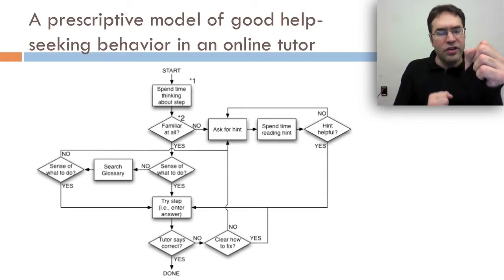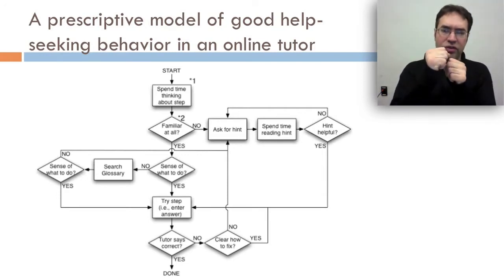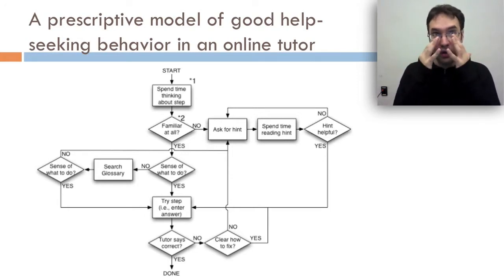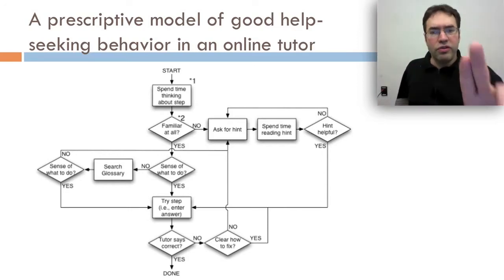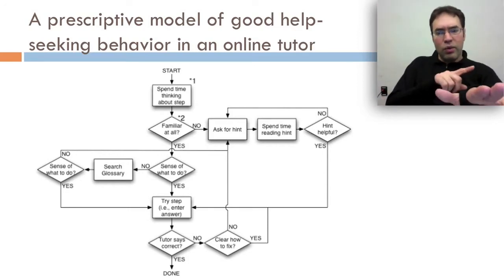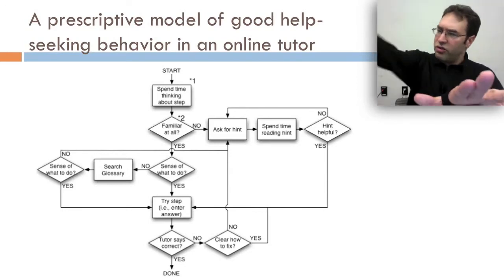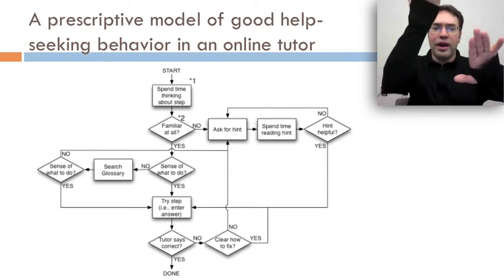If it's familiar, then do they have a sense of what to do? If the student says yes, I have a sense of what to do, then the student should try a step, should enter an answer. If the tutor says it's correct, move on, you're done. But if the tutor says it's wrong, then the student has to say, was it clear how to fix it? And if it is, try a step again. But if it's not, go back and ask for a hint.